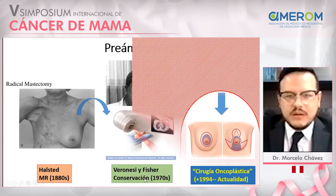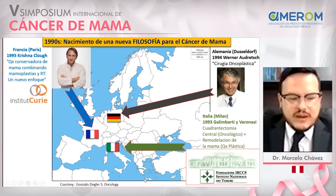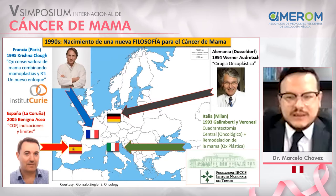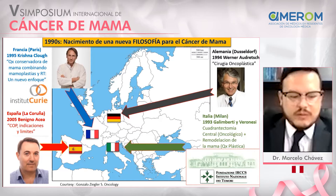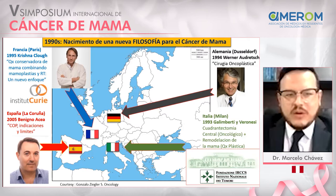Oncoplastic surgery is not just a surgical technique — it is a way of thinking and a philosophy to treat cancer. It was born in Europe: in Italy in 1993, Galimberti and Veronesi described partial breast surgery and reconstruction by a surgeon. In Germany, authors described the term 'oncoplastic surgery' for the first time. Clough described the level 1 and level 2 bi-modality treatment.